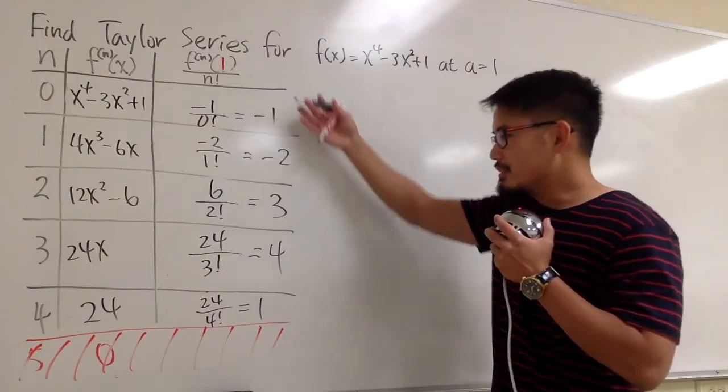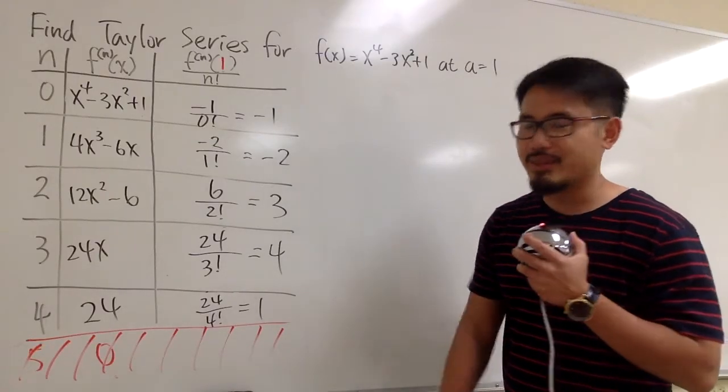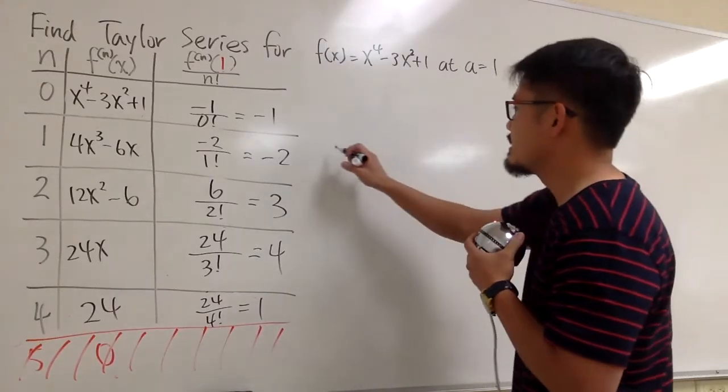So now, these are going to be the coefficients of the Taylor series. And then anything after that will be 0 anyways. So now let me put this down right here for you guys.